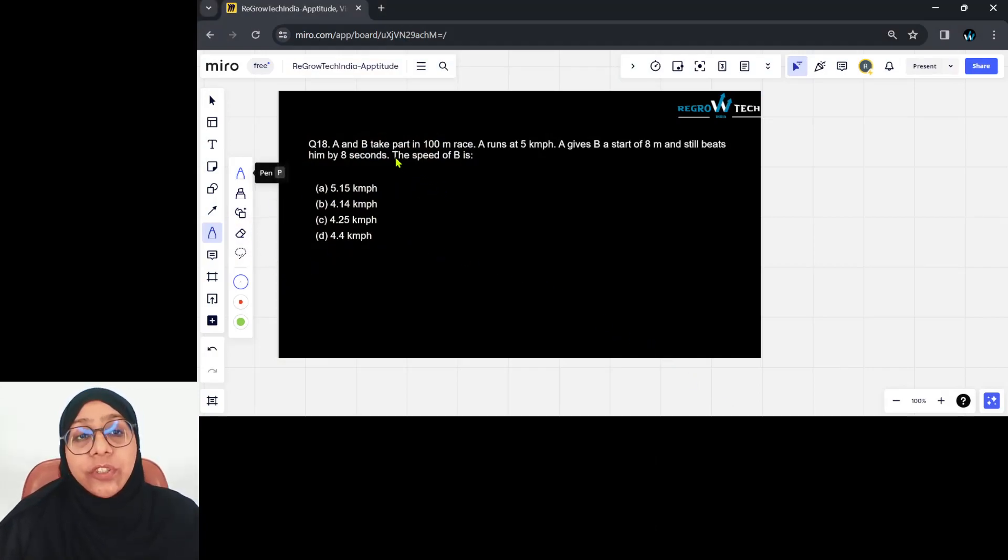The question reads: A and B takes part in a 100 meter race. A runs at 5 kilometers an hour. A gives B a start of 8 meters and still beats him by 8 seconds. The speed of B is what?